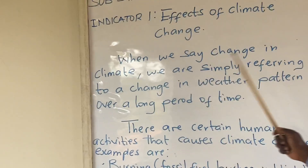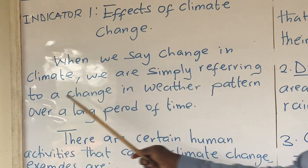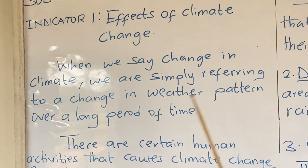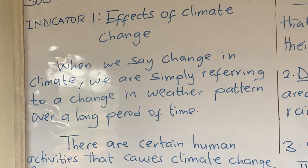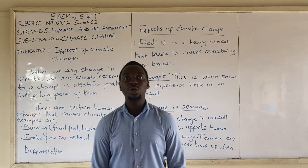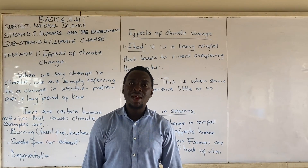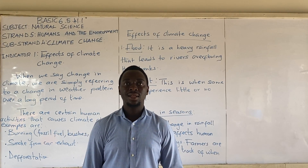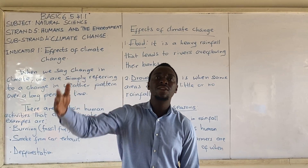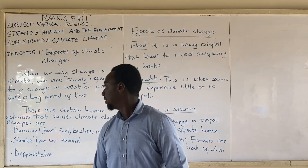When we say change in climate, we are simply referring to a change in weather pattern over a long period of time. When the weather pattern changes — maybe we are in July and we are supposed to experience rainfall, but we are rather experiencing sunshine — the weather pattern has changed. When it continues changing for a longer period, it becomes climate change.